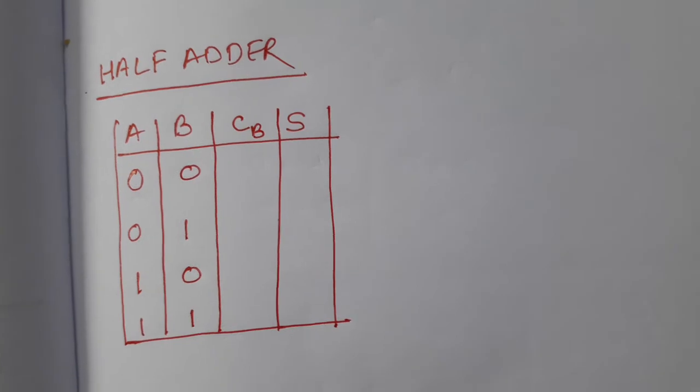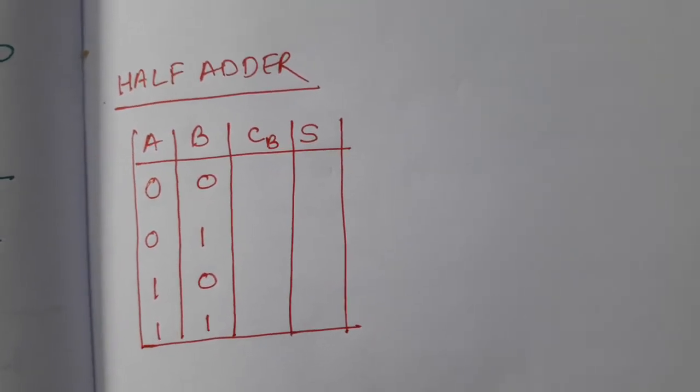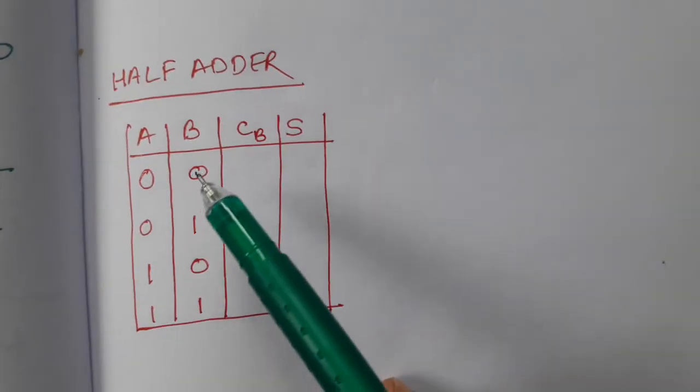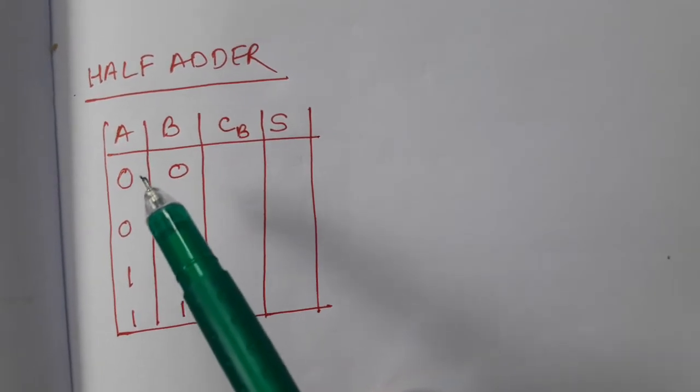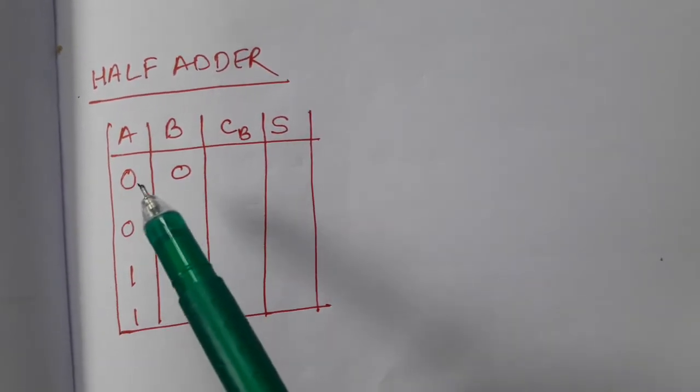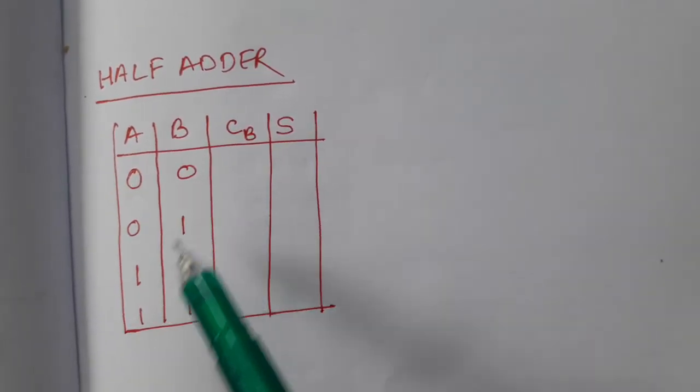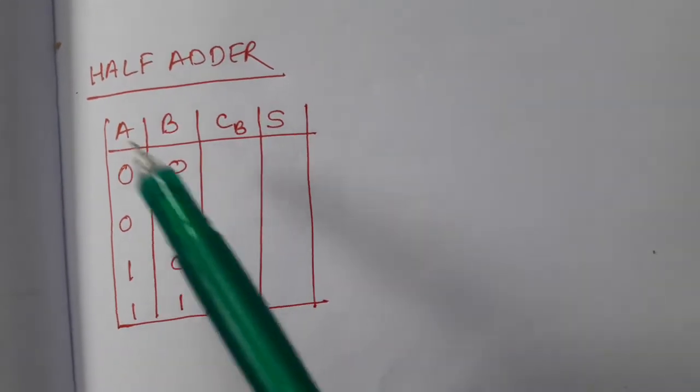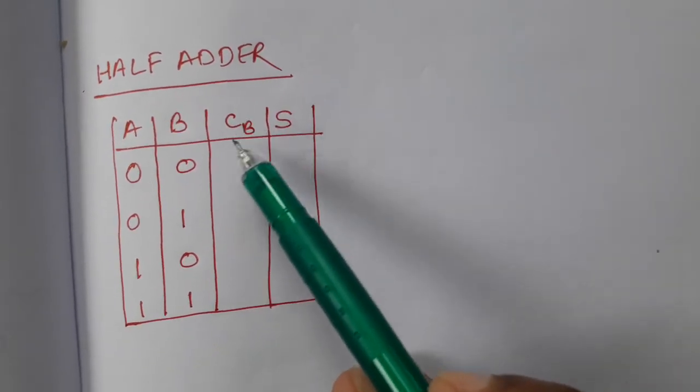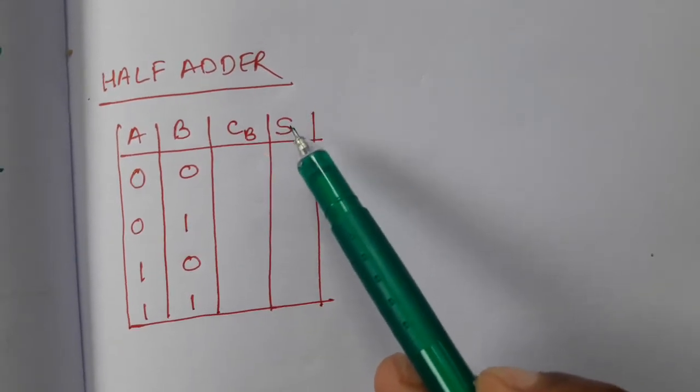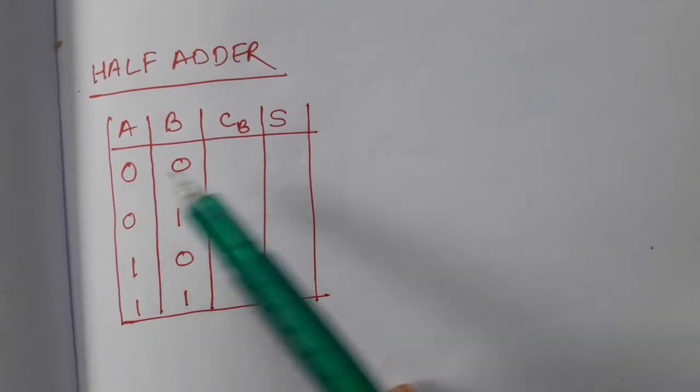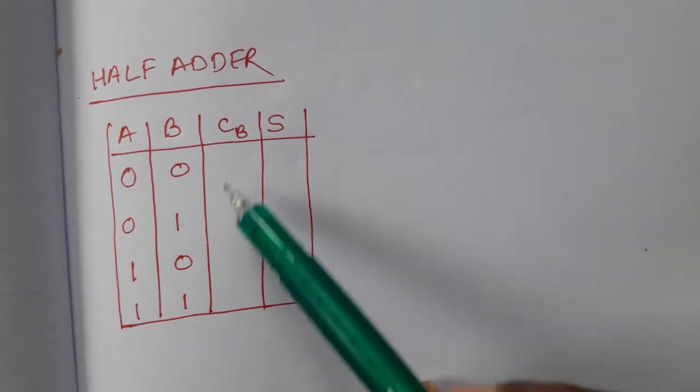So half adder. Now you see here we are having a truth table for half adder. Because I told that 2 bits addition, so we are having 4 possibilities: 0 0, 0 1, 1 0, 1 1. A and B two input ports. CB that is carry bit and S sum bit. So sum value we will write here and carry value we will write here.